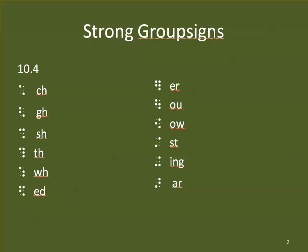The first group we're going to talk about are strong group signs. Group signs are Braille characters that represent groups of letters, and these are the strong ones — those that have a dot in the upper part, lower part, left-hand part, and right-hand part of the cell all at the same time. We're talking about group signs now, not word signs. So when we talk about dots 1 and 6, we mean CH, not child. The other strong group signs are GH, SH, TH, and WH — I call those the H contractions.